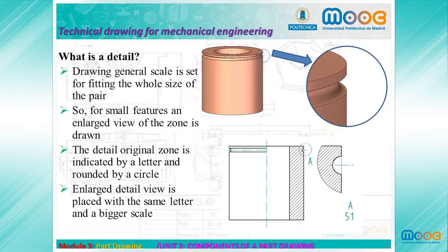What is a section? A sectional view could be too complex for cases in which we don't need to give additional information. In this case, in a section, only the intersection between the cutting plane and the part is drawn. The section can be revolved over the relevant view; otherwise, it has to be indicated and placed in another location in the drawing with the relevant name.